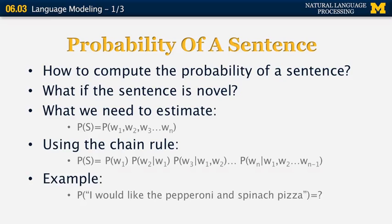Let's look at an example. Suppose the sentence is 'I would like the pepperoni and spinach pizza.' The probability of this sentence is equal to the probability of 'I,' times the probability of 'would' given 'I,' times the probability of 'like' given 'I would,' and so on, all the way to the probability of 'pizza' given all the previous words.